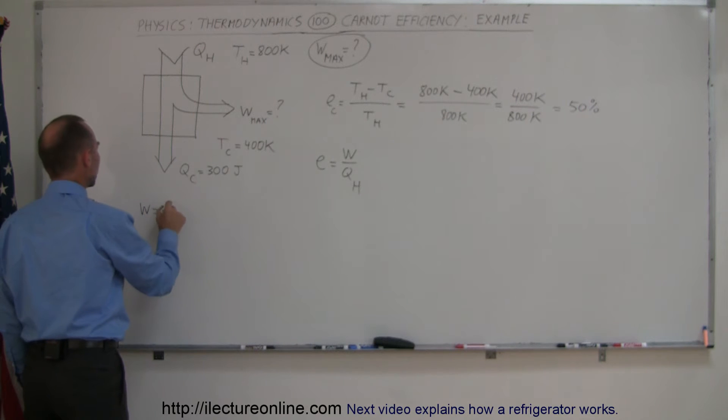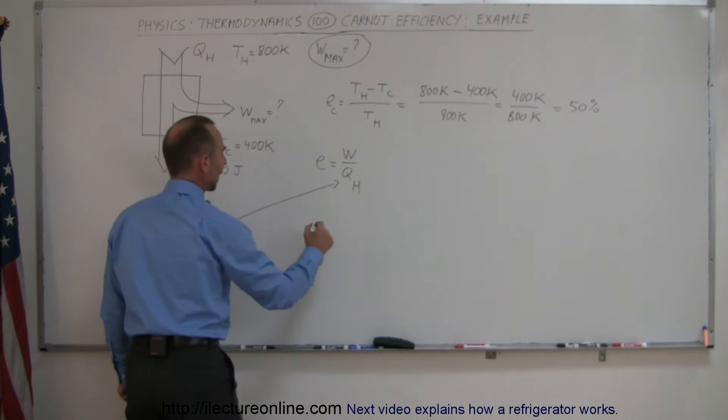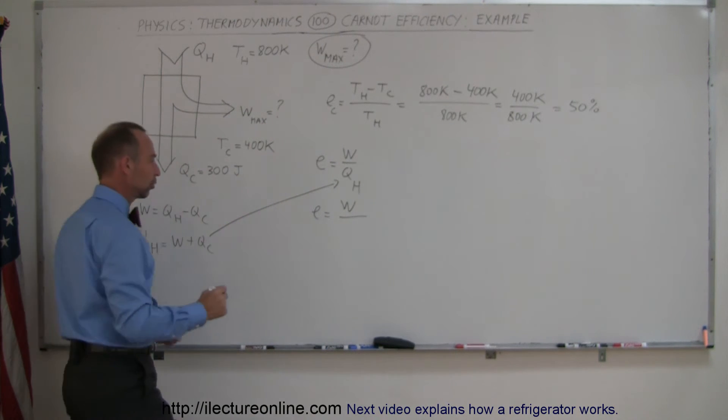So work is equal to Q hot minus Q cold, and then we can replace Q hot by, if we solve for Q hot, Q hot is equal to work and we bring the Q cold across plus Q cold, and that can then go in here, so now we have the efficiency is equal to work divided by work plus Q cold.